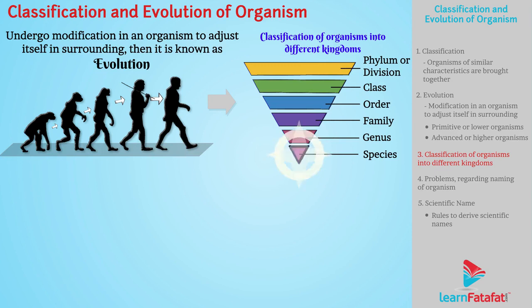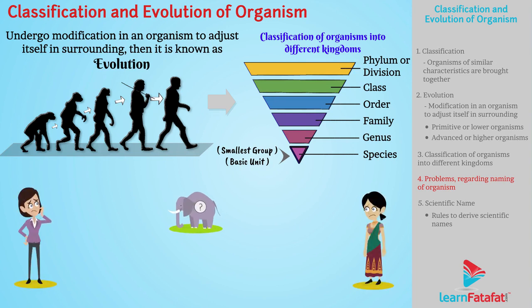Species are the smallest group or basic unit of classification of living organisms. After classification of organisms, there were problems regarding the naming of organisms.